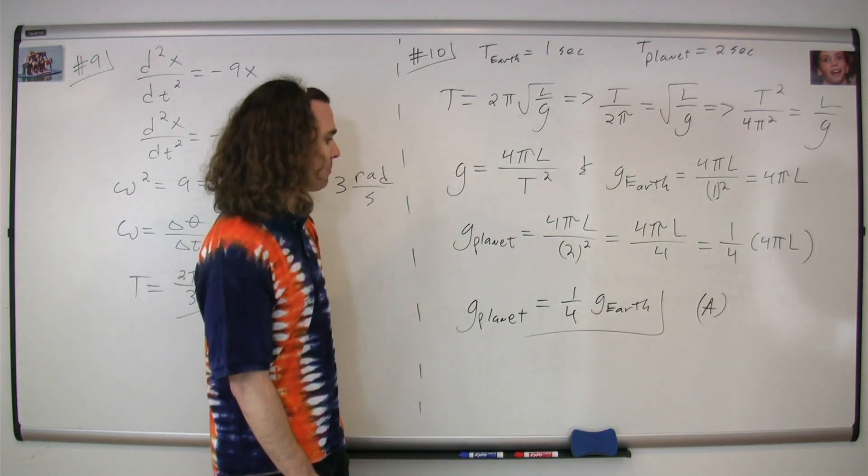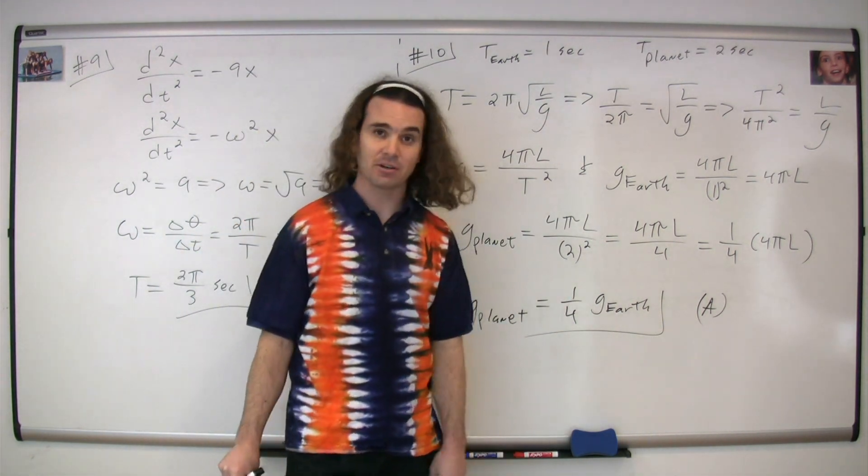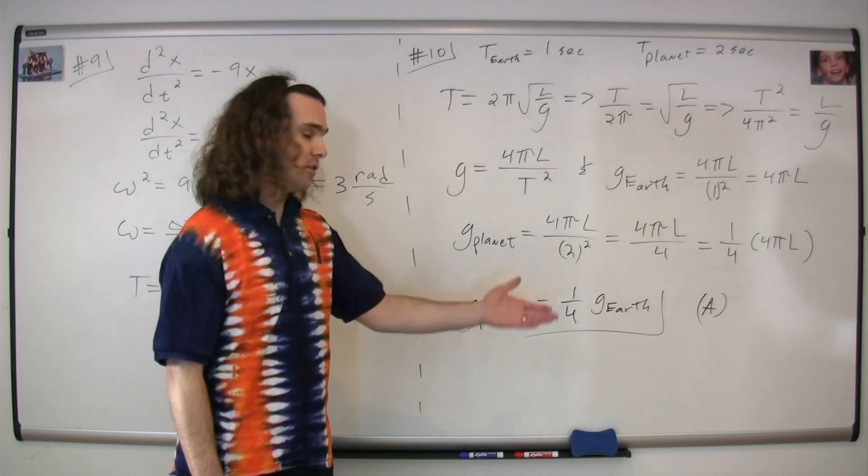Therefore, the acceleration due to gravity on the planet equals one-fourth the acceleration due to gravity on Earth. The correct answer is A.